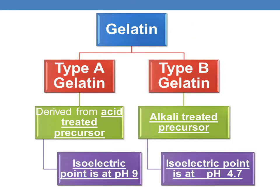Coming to the types of gelatin. Gelatin is broadly categorized into two types: type A and type B. Type A gelatin is derived from an acid-treated precursor. Type B gelatin is derived from an alkali-treated precursor.